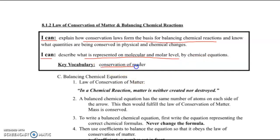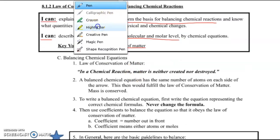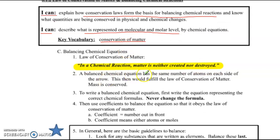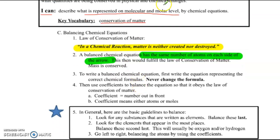Our key vocab is conservation of matter. The most important thing we need to remember — you probably learned this back in middle school — is that the law of conservation of matter says: in a chemical reaction, matter is neither created nor destroyed. All we're doing is shuffling around electrons and forming new compounds with what already exists. So a balanced chemical equation has the same number of atoms on each side of the arrow, which fulfills the law of conservation of matter.